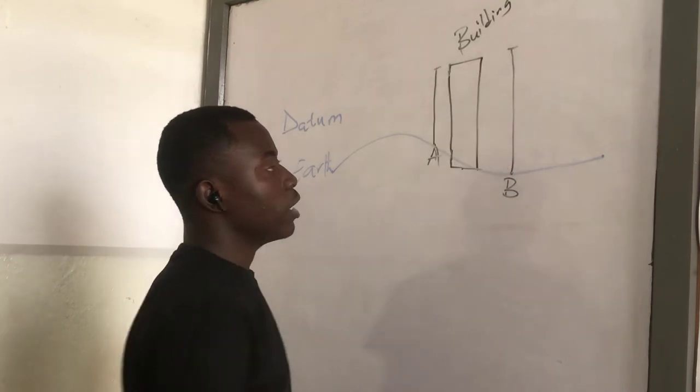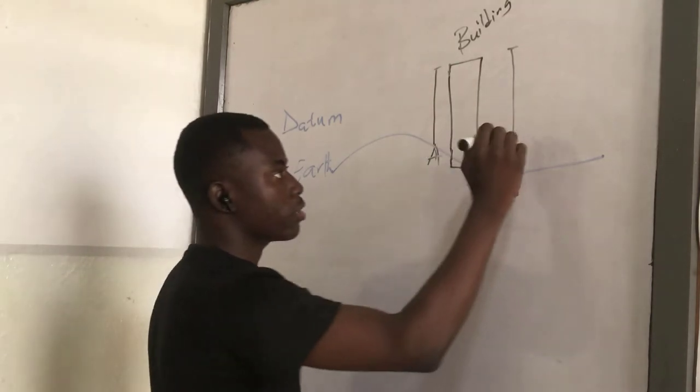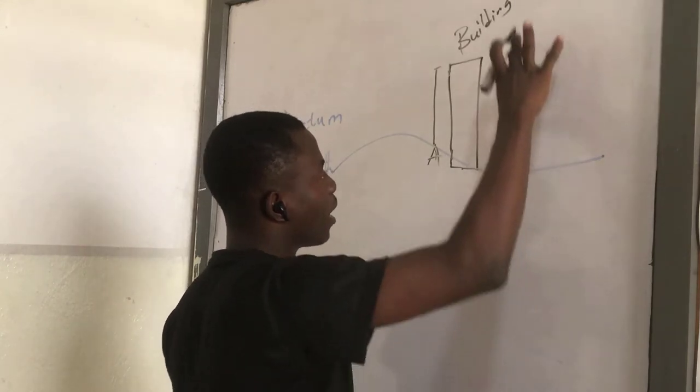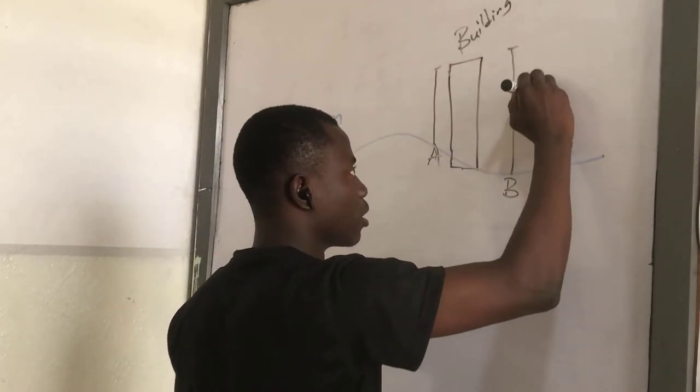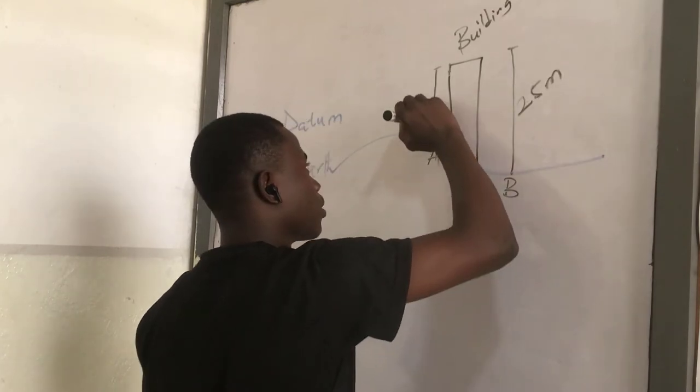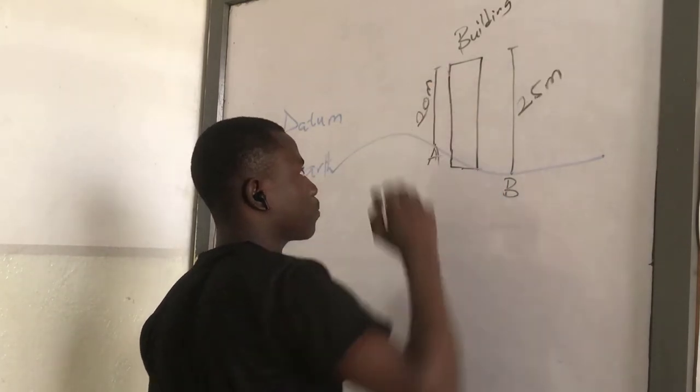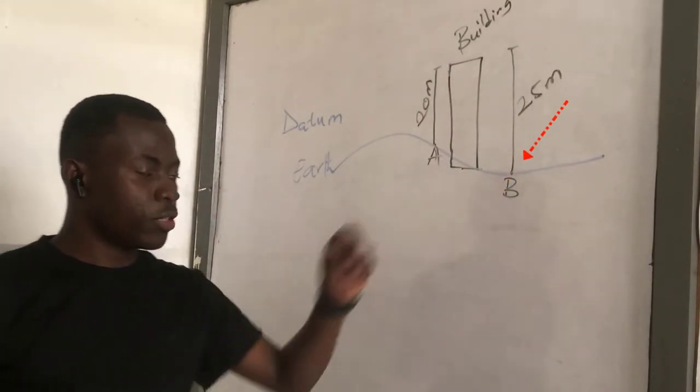Do you think they'll get the same values? If you look at this diagram, you realize that this person's height will be much higher than this person's height. Let's say while this person is getting 25 meters, this person will probably get 20 meters, and the reason is because this person measured from a depression.